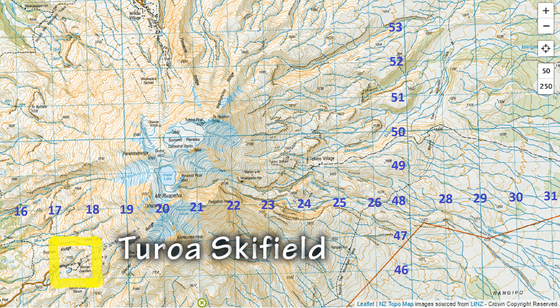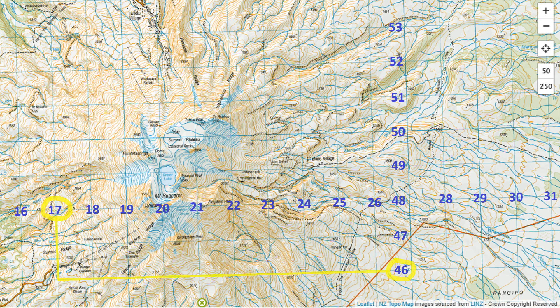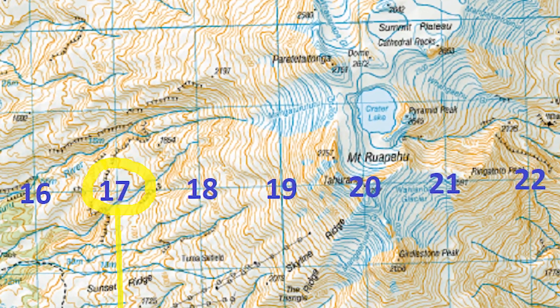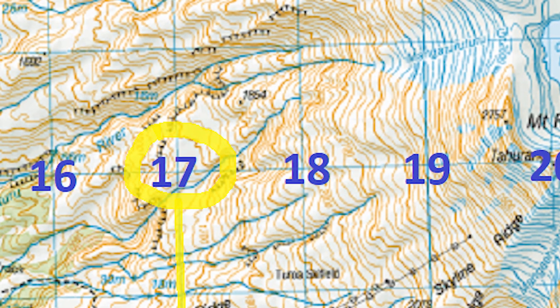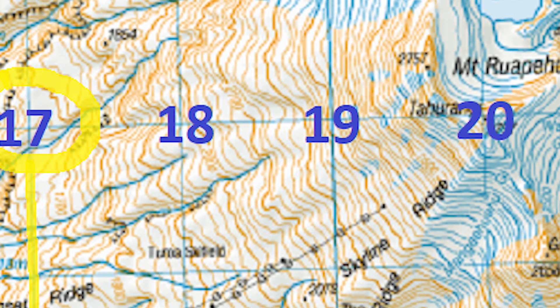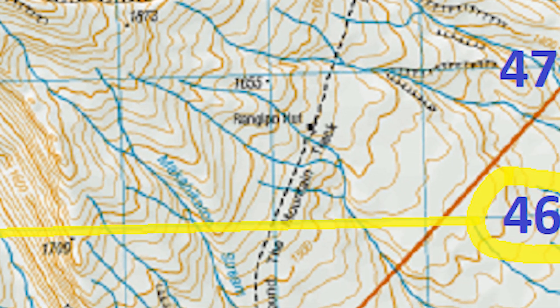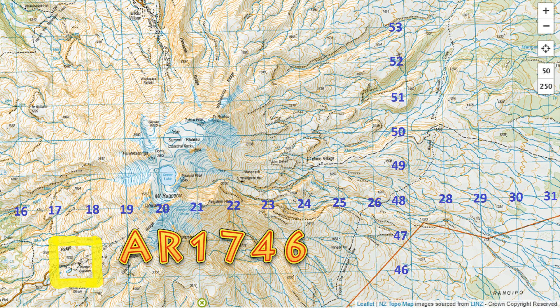First, let's find the area reference for the Tuura ski field. To work out the area reference, look for the two intersecting numbers of that grid square that represent the eastings and the northings. Write down the two numbers on the bottom that represent the eastings, then write down the two numbers on the y-axis that represent the northings for that grid square. In this case the eastings are 17 and the northings are 46, giving us an area reference of 1746.